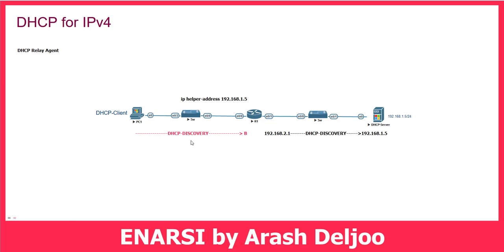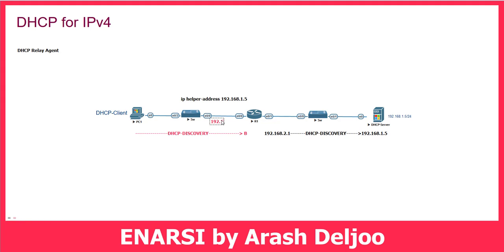Here is the addressing example: on the left side we are using 192.168.20.0/24 and the IP of the router interface is .21. On the right side we are using 192.168.10.0/24, the gateway is .1, and the DHCP server IP is 192.168.15.